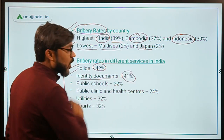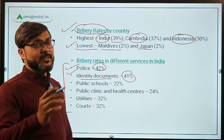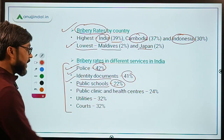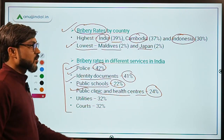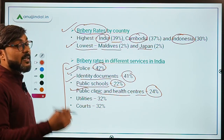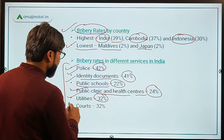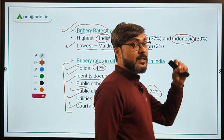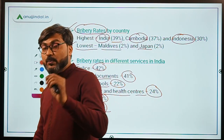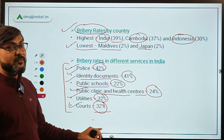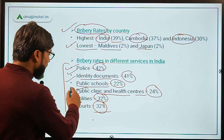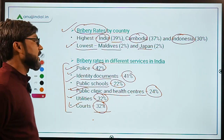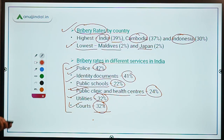This report also provides bribery rates in different services in India. According to this report, Police services is the most corrupt department in our country. The bribery rate for identity documents like PAN card, Aadhaar card, passport, election ID card, and driver's license is 41%. Public schools are at 22%. Utilities are at 32%, and there is also corruption in our judicial system at 32%.